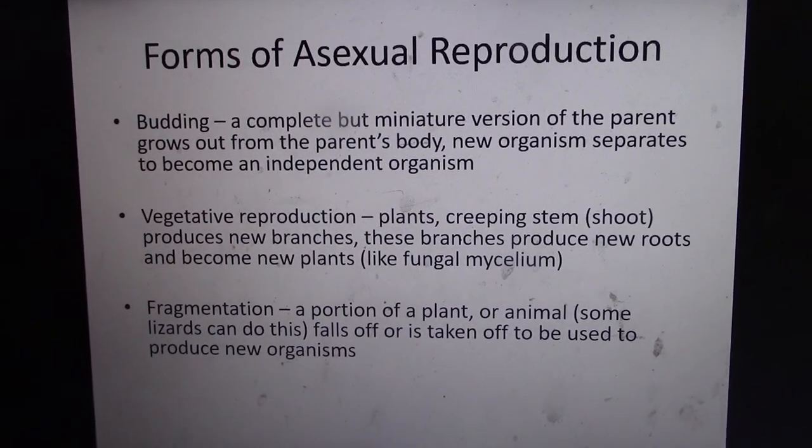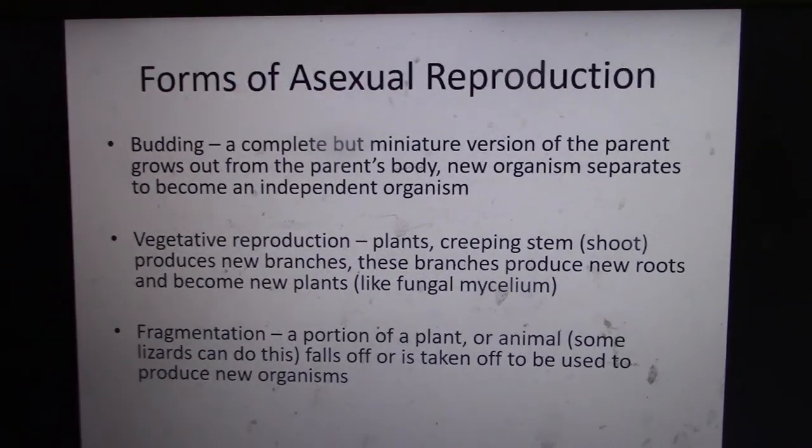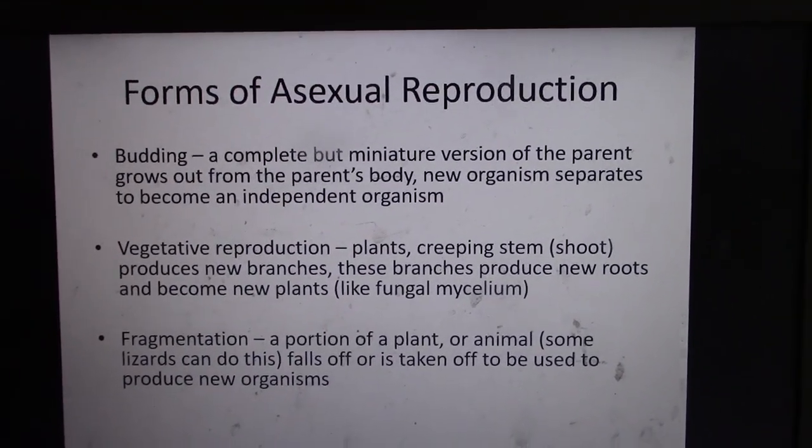So forms of asexual reproduction. In eukaryotic cells there's budding, vegetative reproduction, and fragmentation.